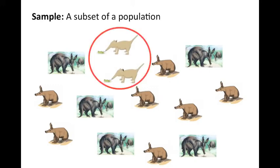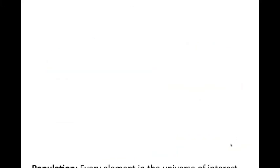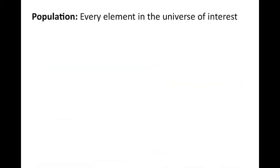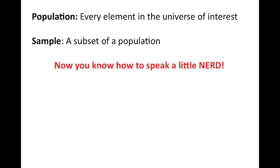We might be interested now in this subset of Hungarian albino banded aardvarks. And here they are. We have the entire population, but we might be interested in this sample, which is just part of it. Now, a population is every element in the universe of interest. A sample is a subset of a population.